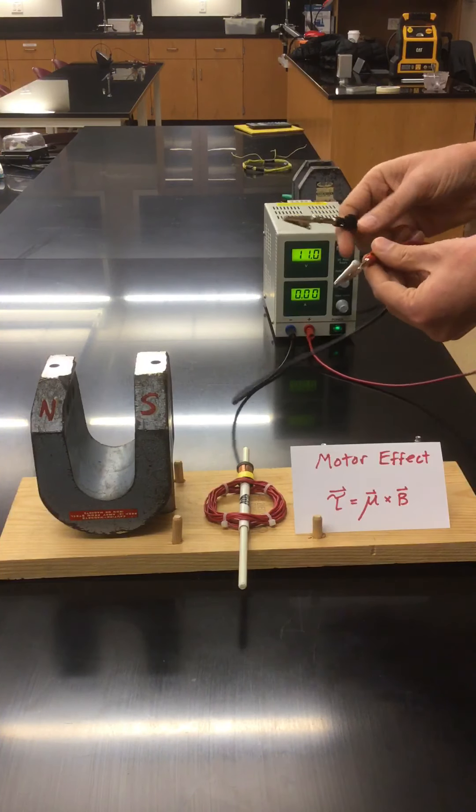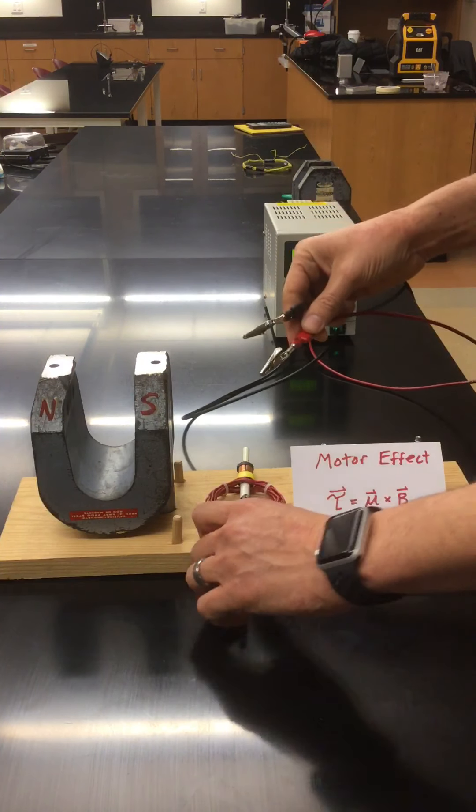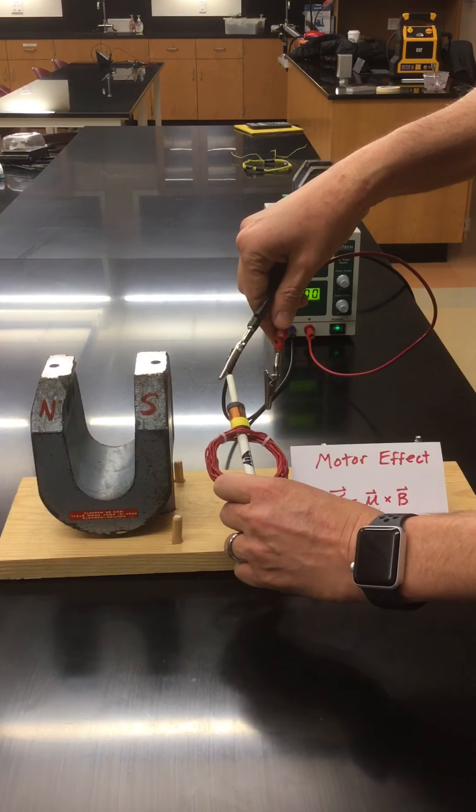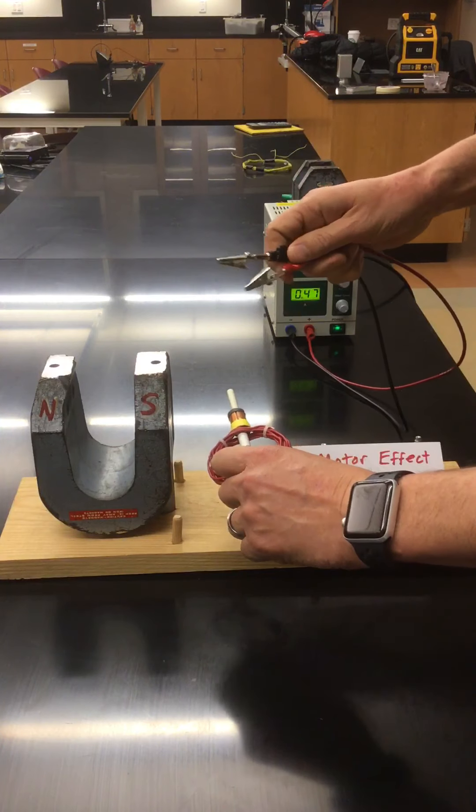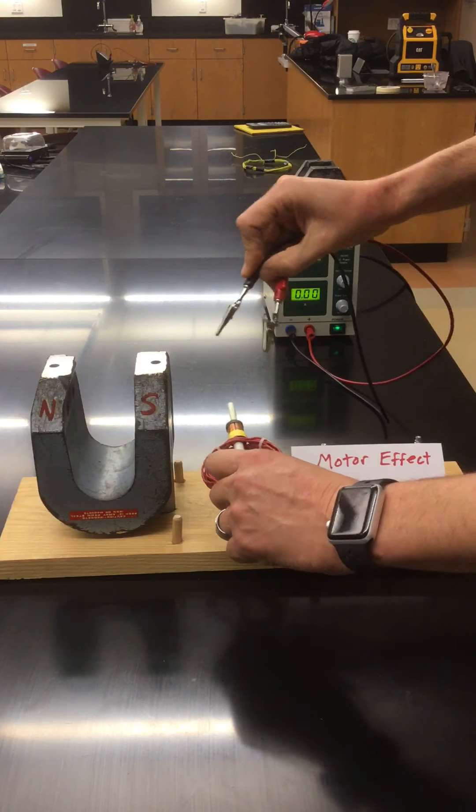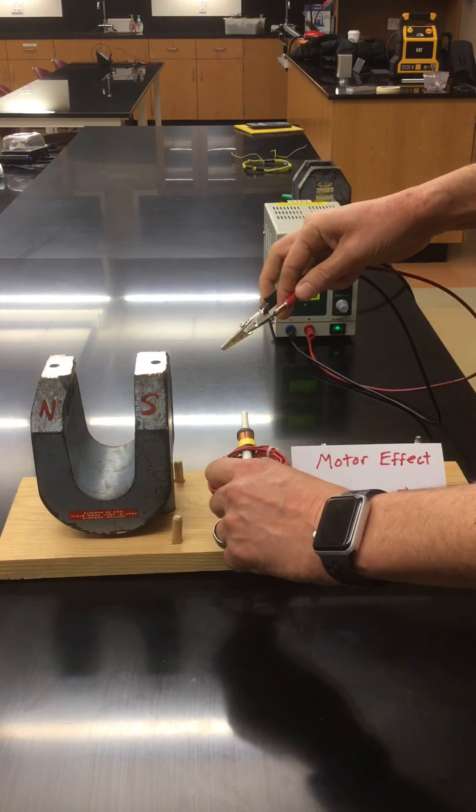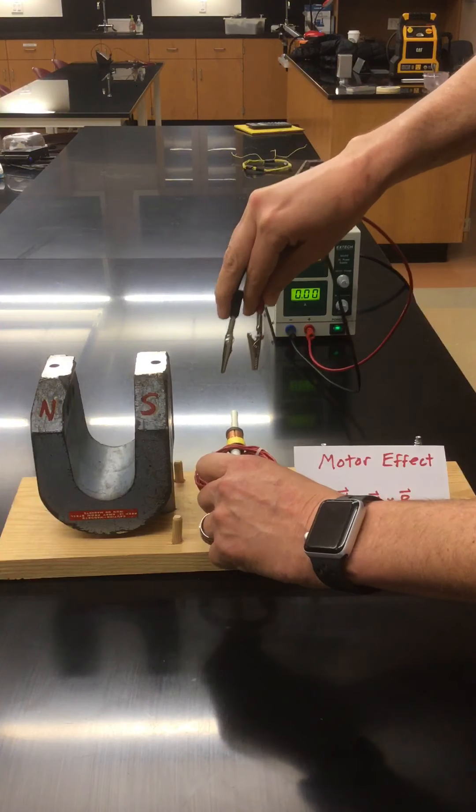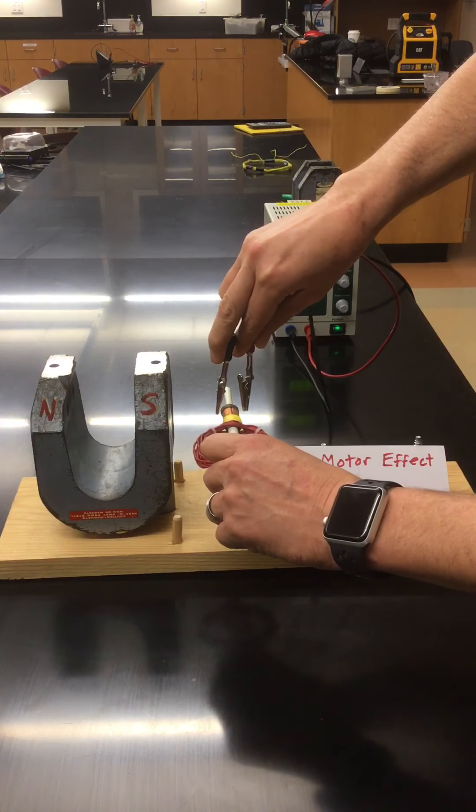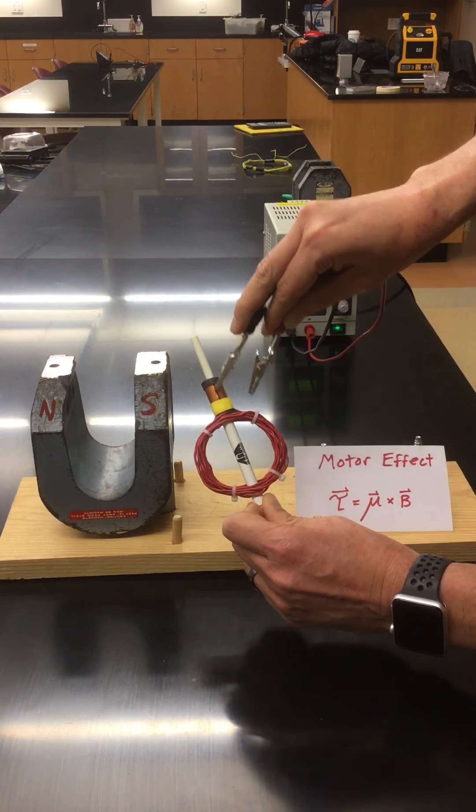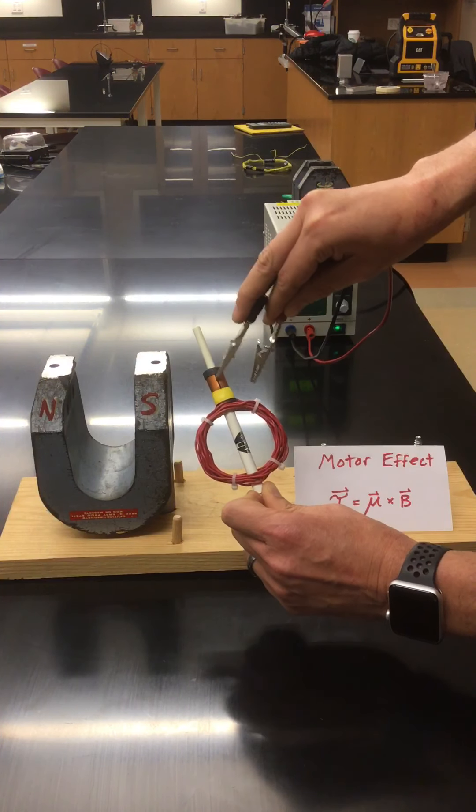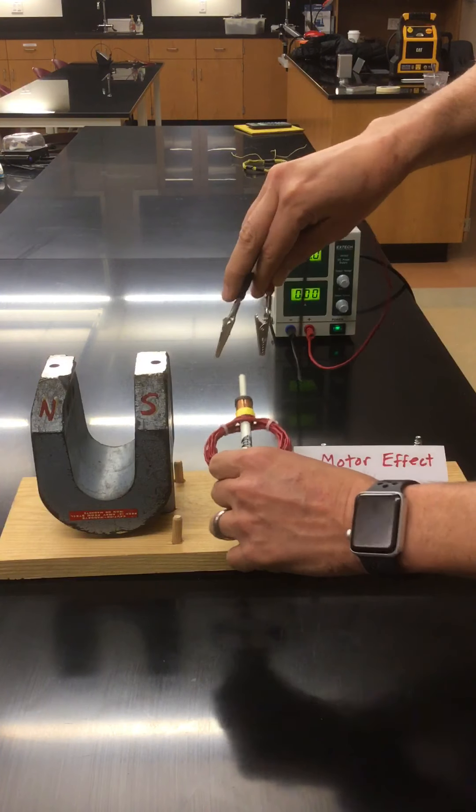So we need a current to flow. Now, if I took these alligators and clipped them on, then as it spins, the wires would get all twisted up. So what I'm going to use is, well, same thing all motors use, brushes. The alligator clips will serve as brushes that just barely contact this little piece of metal. Notice the gap in it, we call that the commutator gap.